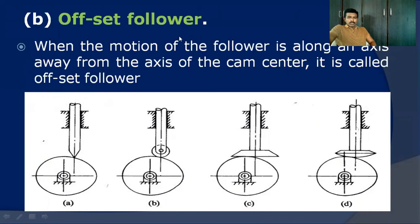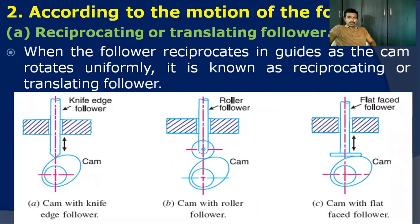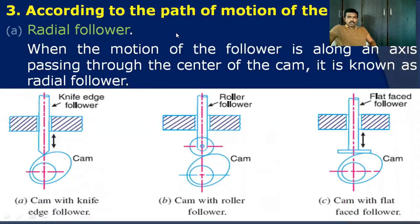So in this way we can classify the followers based on three parameters: first, based on the shape of the contact surface; second, according to the motion of the follower; and third, based on the path or trajectory of the motion of the follower. I hope it is clear. Thank you.